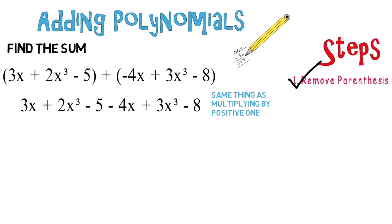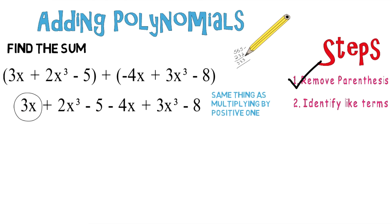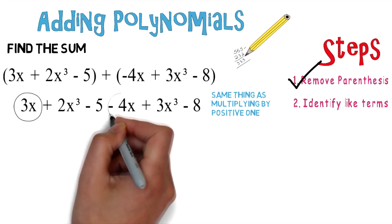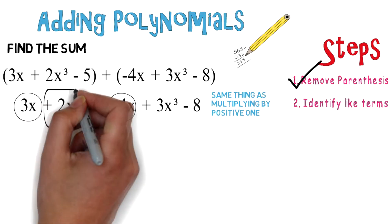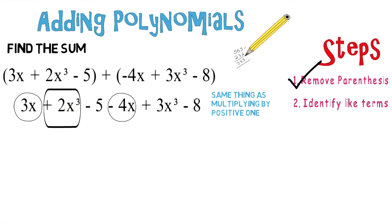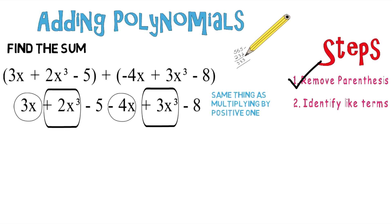Move on to the second step, which is to identify like terms. So let's take a look here. You have a 3x and you have a negative 4x. Let's circle those as those are like terms. You also have positive 2x to the third power and positive 3x to the third power, also like terms, and a negative 5 and a negative 8.